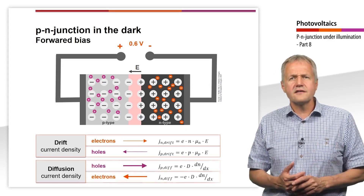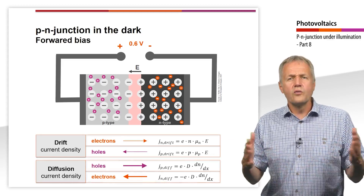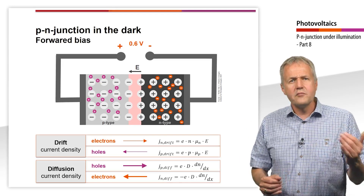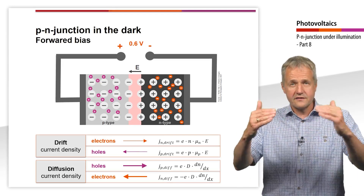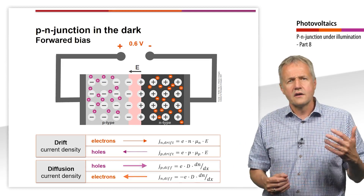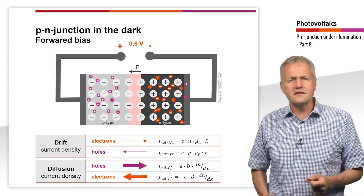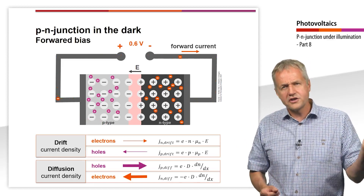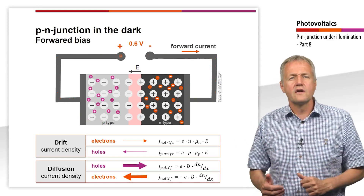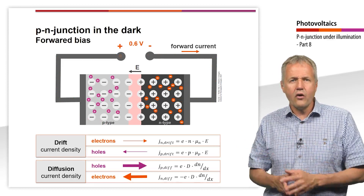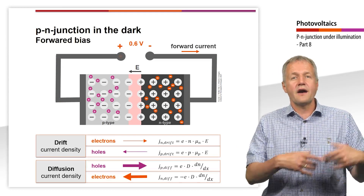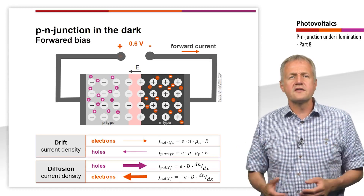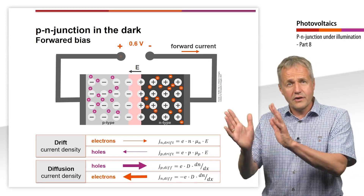For the diffusion current densities, the effect is opposite. Since the width of the depletion region is narrowed, dx is decreased and thus dn/dx is increased at the same time. That means the diffusion current densities of the minorities increase. In sum, holes are transported into the n-region where they are attracted by the negative pole, and electrons into the p-region where they are attracted by the positive pole. Overall, the forward voltage results in a net current flow in the forward direction.